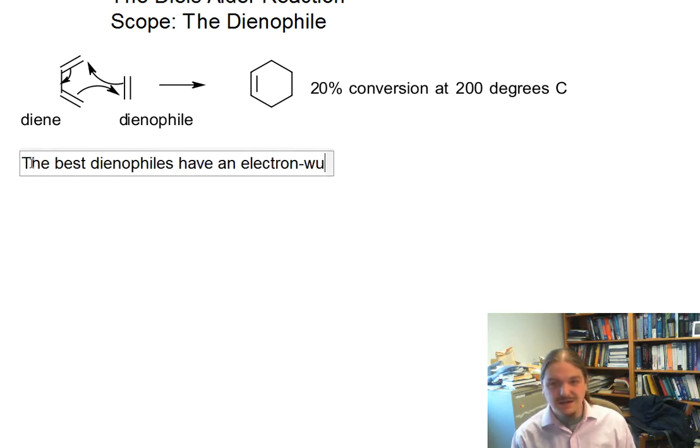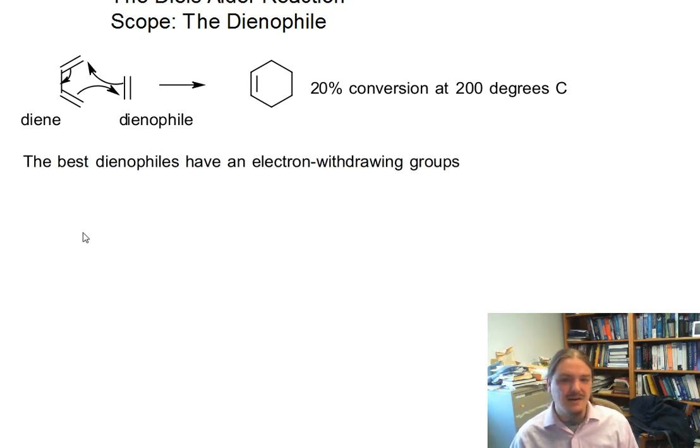So the best dienophiles have an electron withdrawing group. I almost said electrophile, because electron withdrawing groups also make good electrophiles. But the best dienophiles have electron withdrawing groups on them. So what are our electron withdrawing groups?